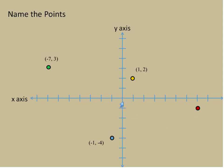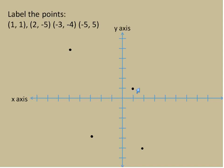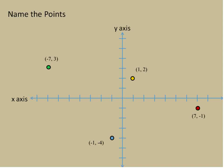And then this red point way out here — we start at the origin, go one, two, three, four, five, six, seven to the right, which is a positive seven. And we move down one, which means negative one for our y-value. So that point is (7, -1). Those are the labels for each of those points. Again, the two types of questions you might see: you might be given ordered pairs and asked to graph them, or you might be given points on the graph and asked to name the ordered pair.